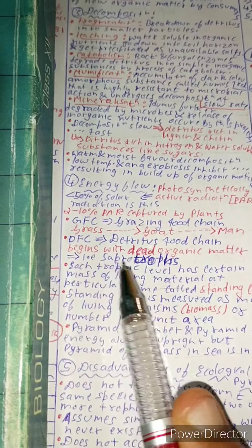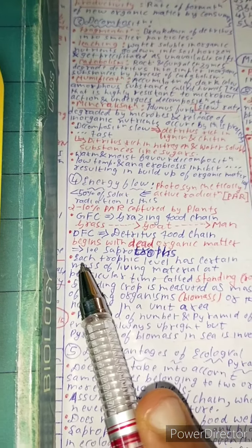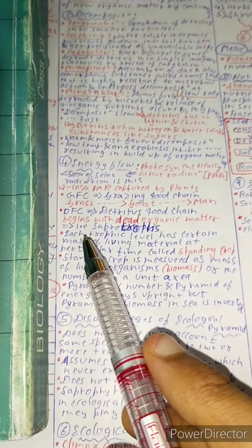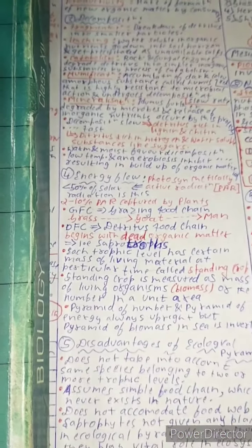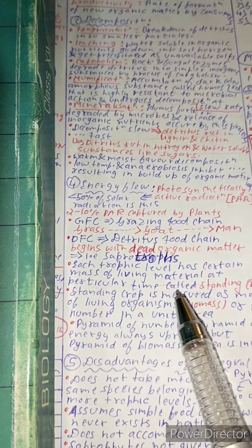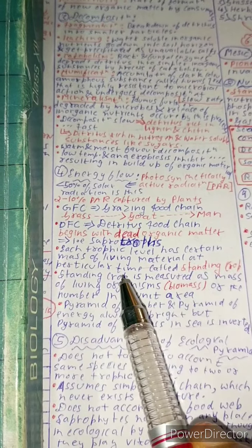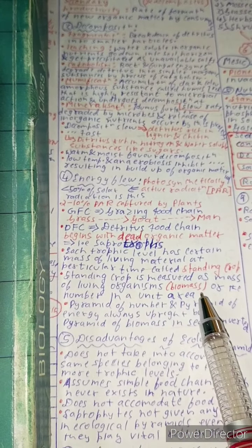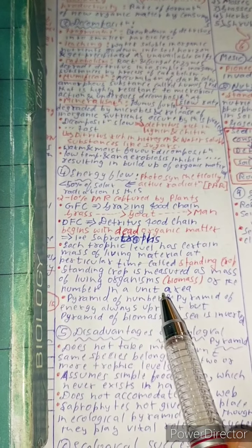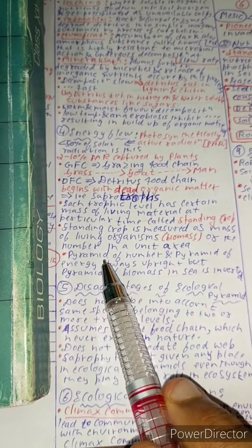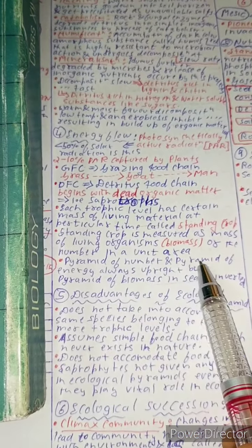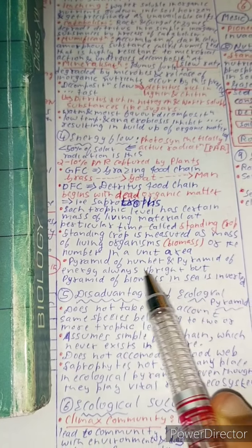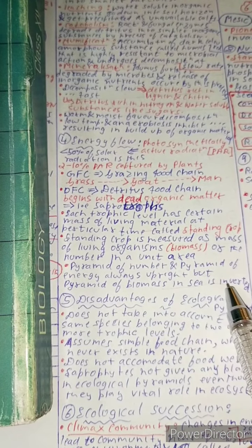Each trophic level has certain mass of living material at particular time and is known as standing crop. Standing crop is measured as mass of living organism or biomass or the number in a unit area. Pyramid of number and pyramid of energy is always upright, but pyramid of biomass in sea is generally inverted.